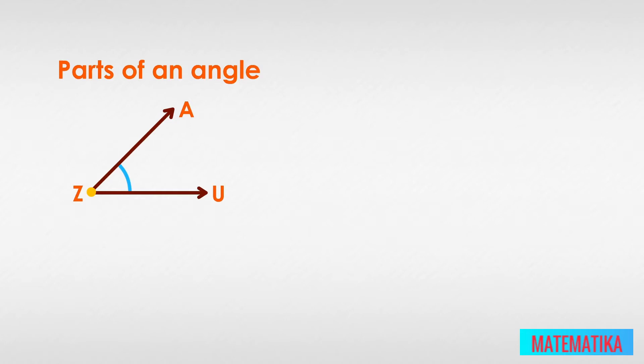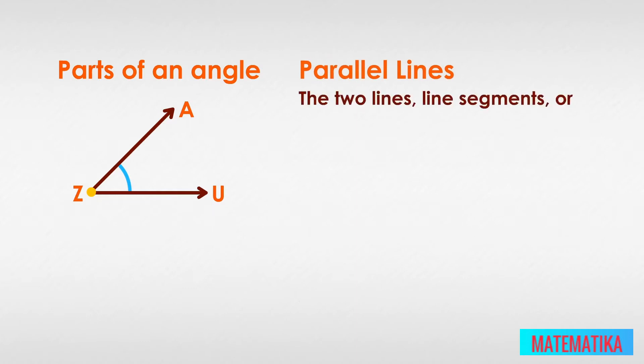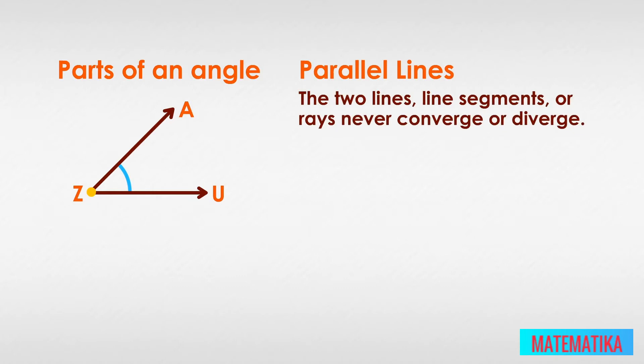Unlike the intersecting rays ZA and ZU, parallel lines never meet. The two lines, line segments, or rays never converge or diverge. The only sneaky way to get an angle from parallel lines is to declare each line is a straight angle, which has a measure of 180 degrees.